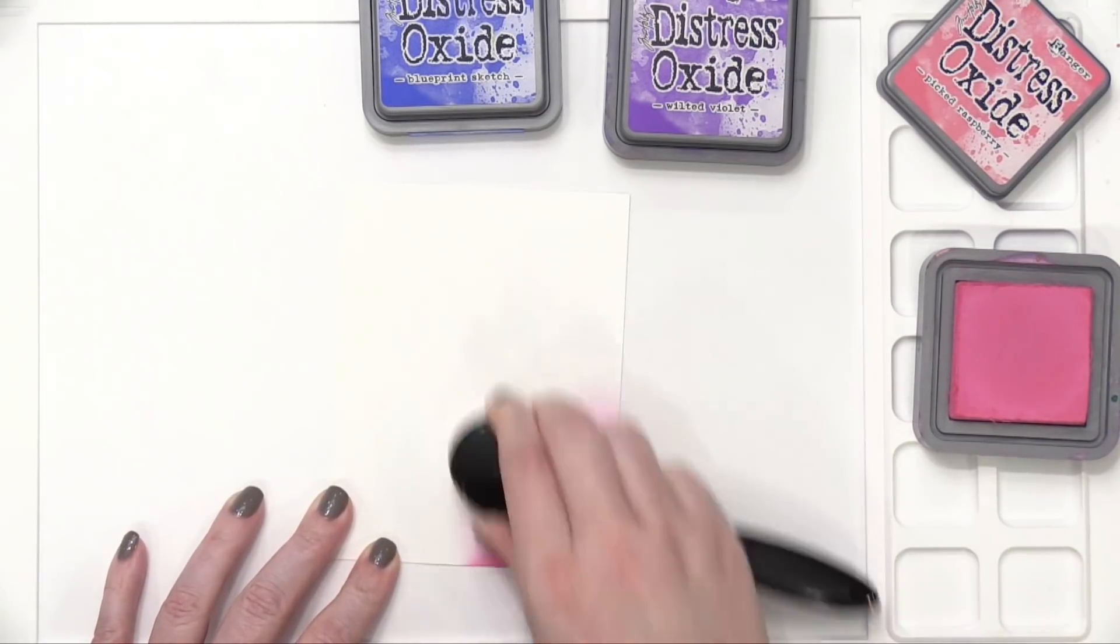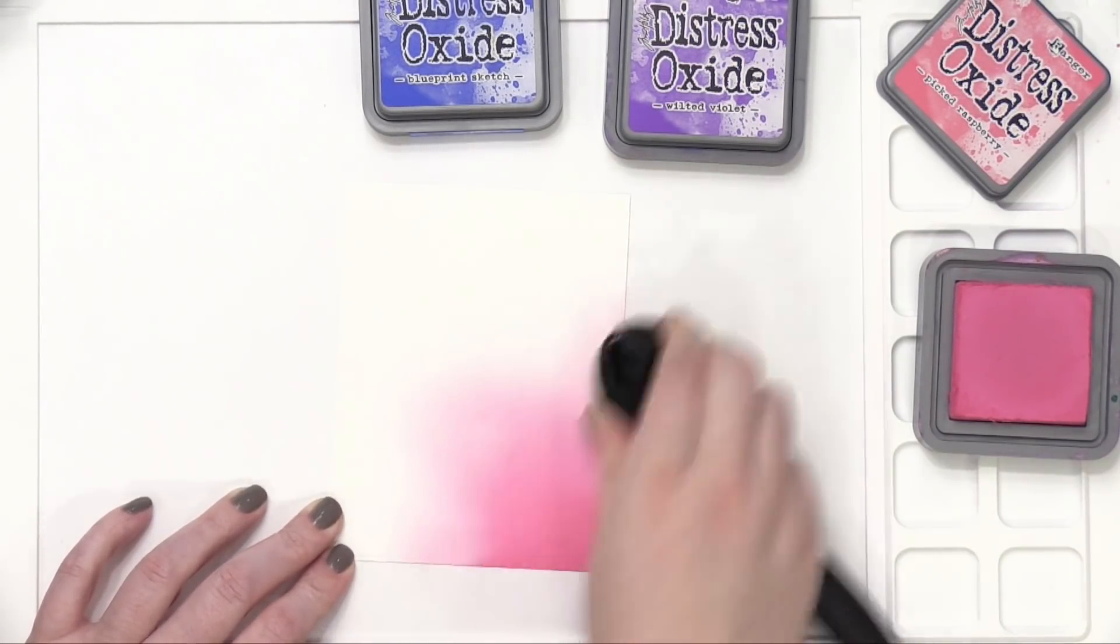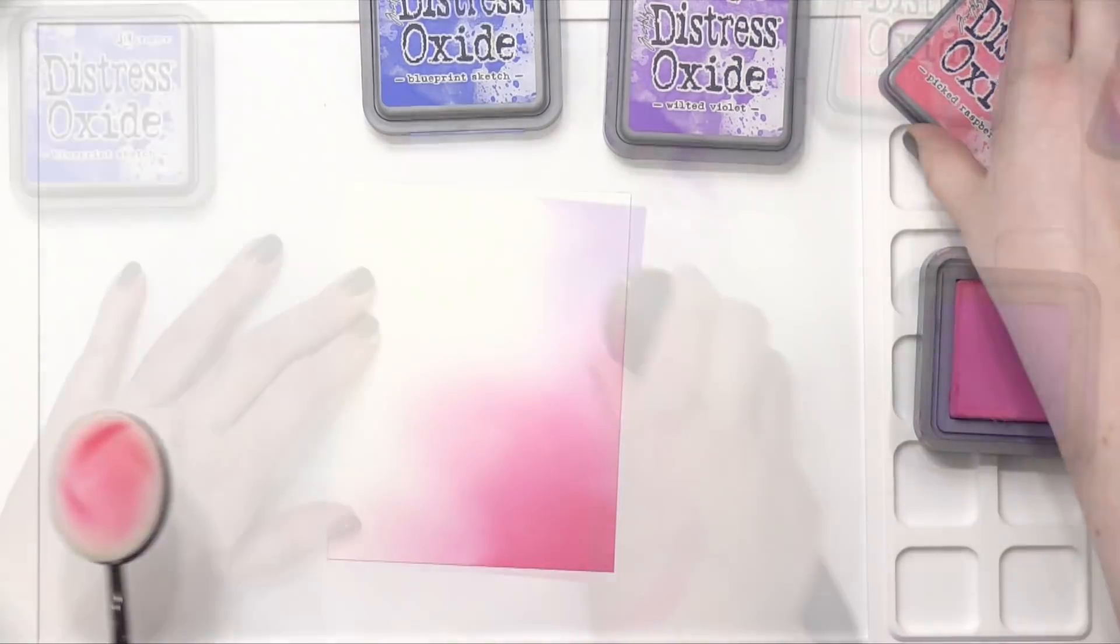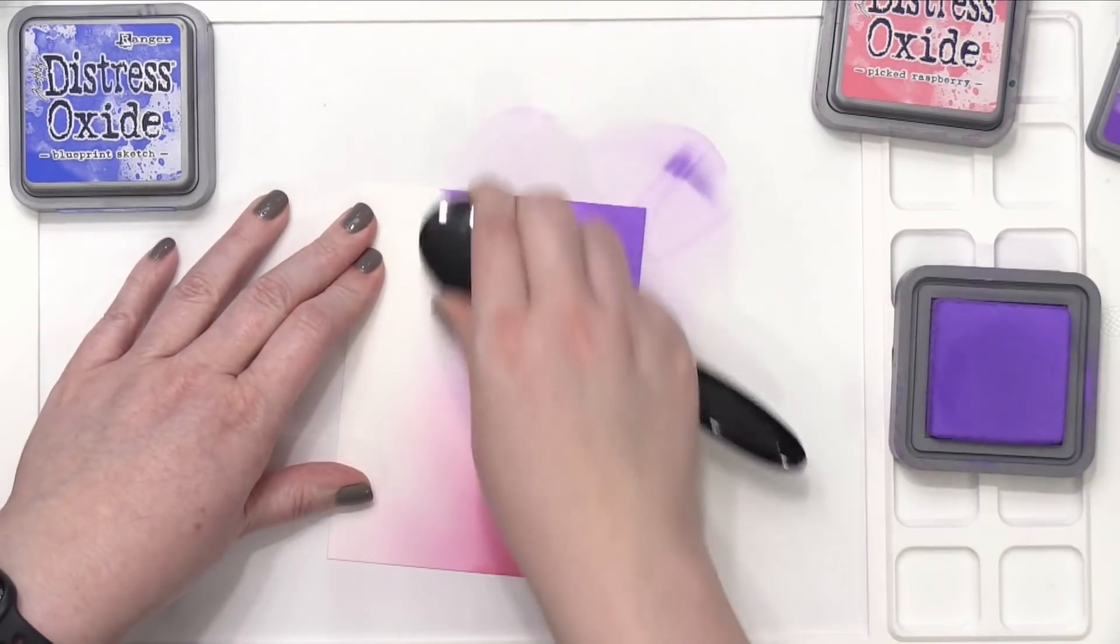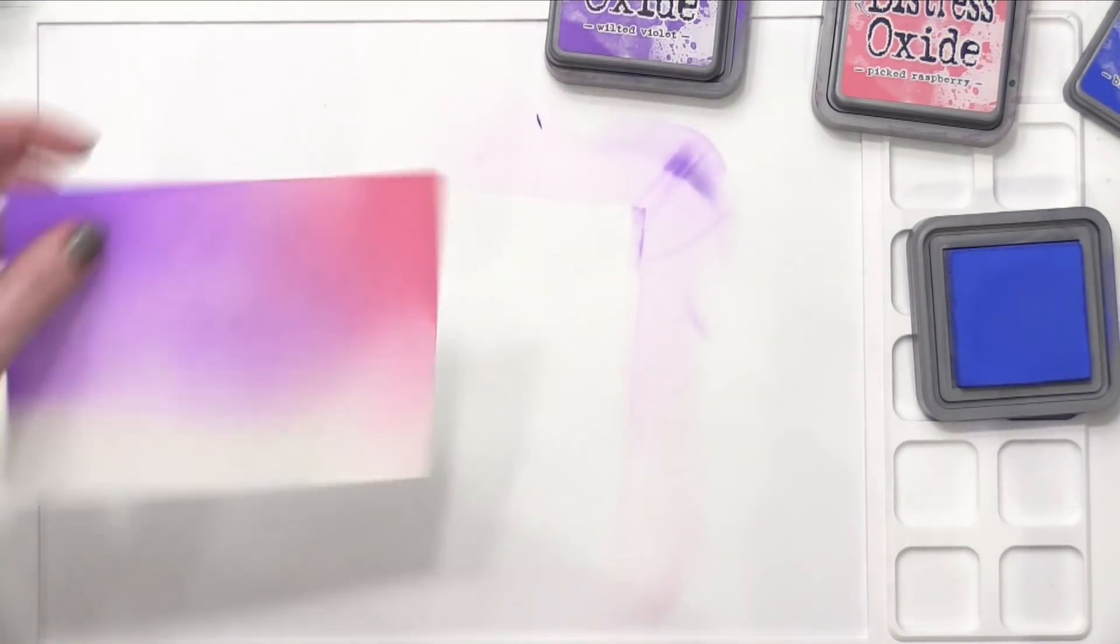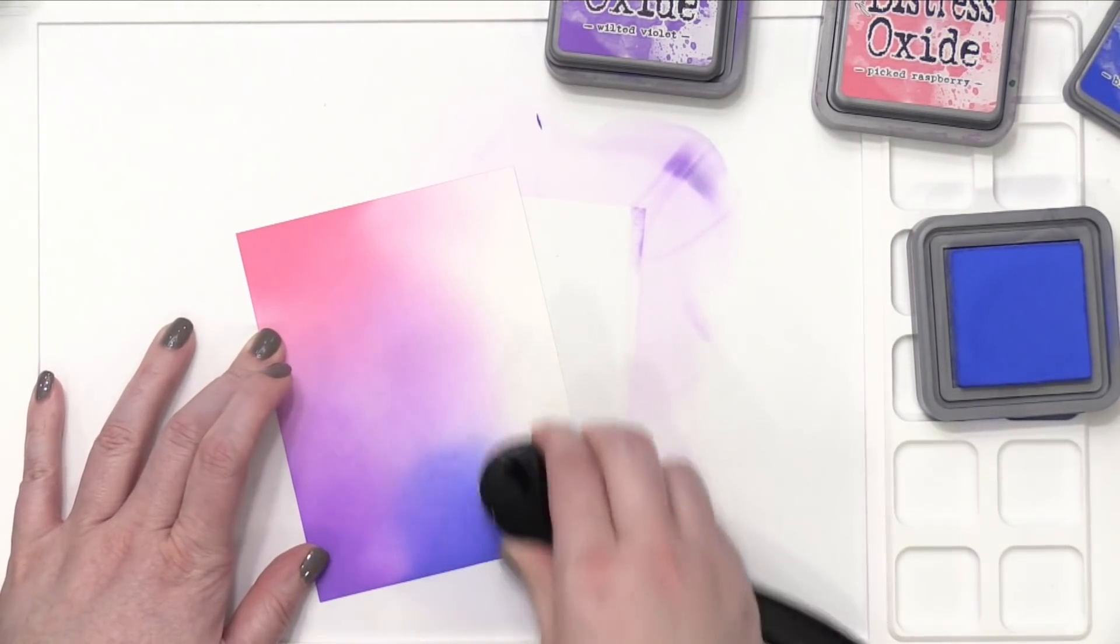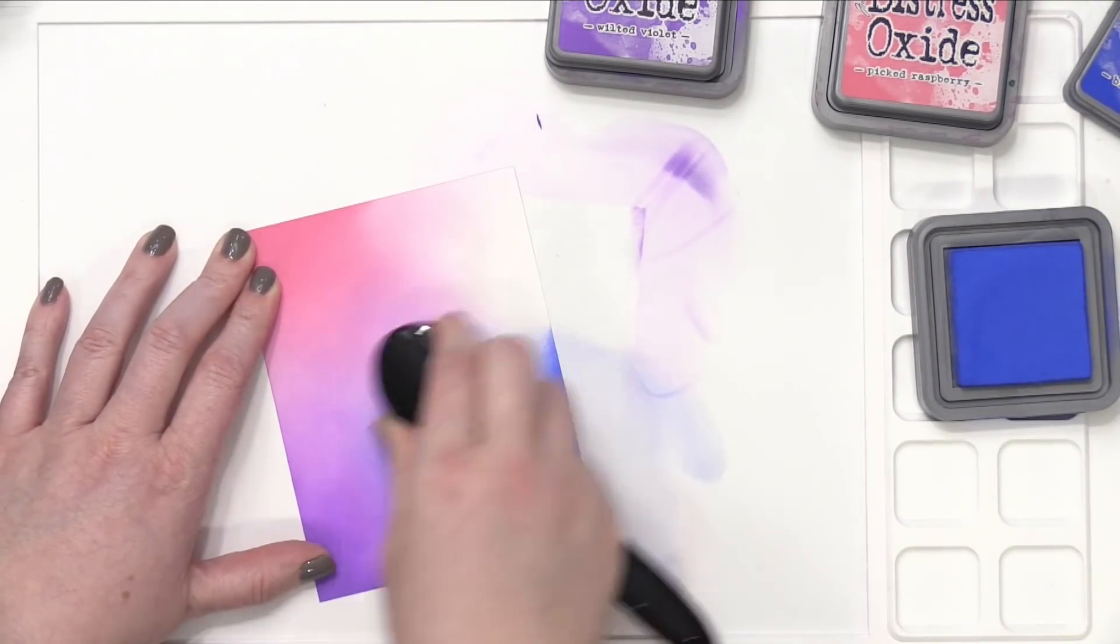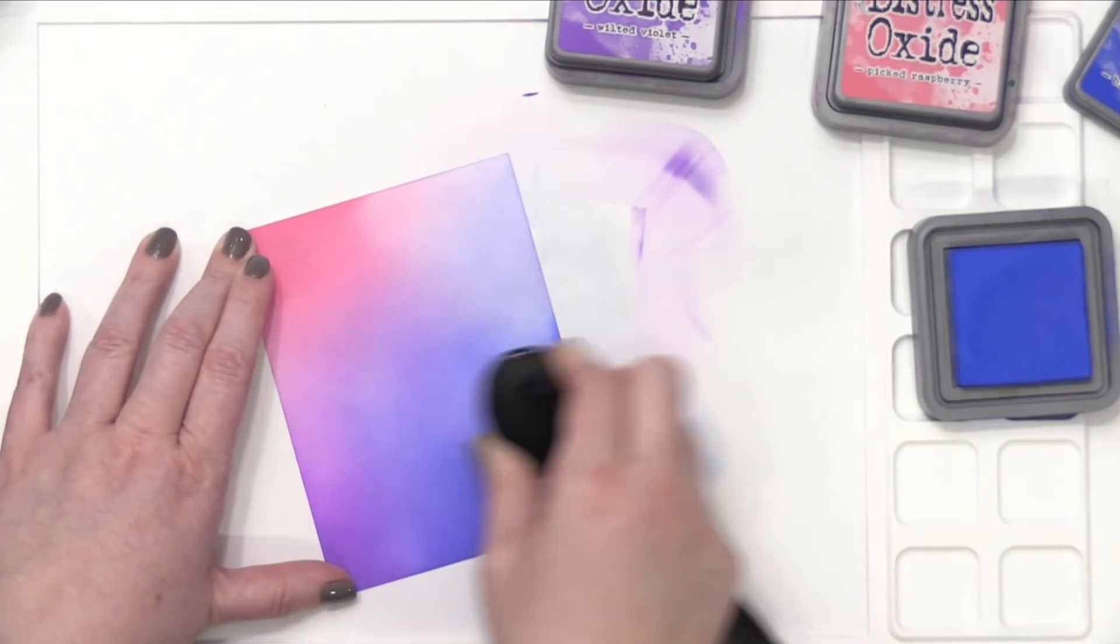I'm going to start out with this Picked Raspberry color and I want it to be fairly saturated in one corner. As I add the colors for this under layer I want to make sure I have a bright enough color but not completely fully saturated. I've added some Wilted Violet and now I'm coming in with Blueprint Sketch. I just want a little bit of a softer fade up in that other top corner.